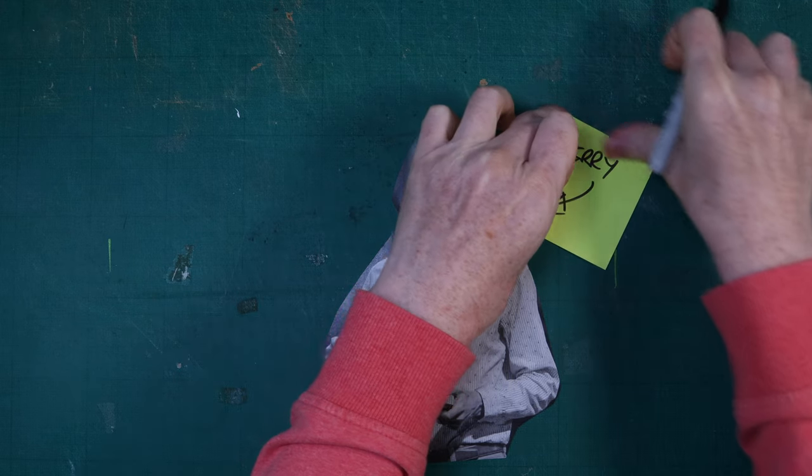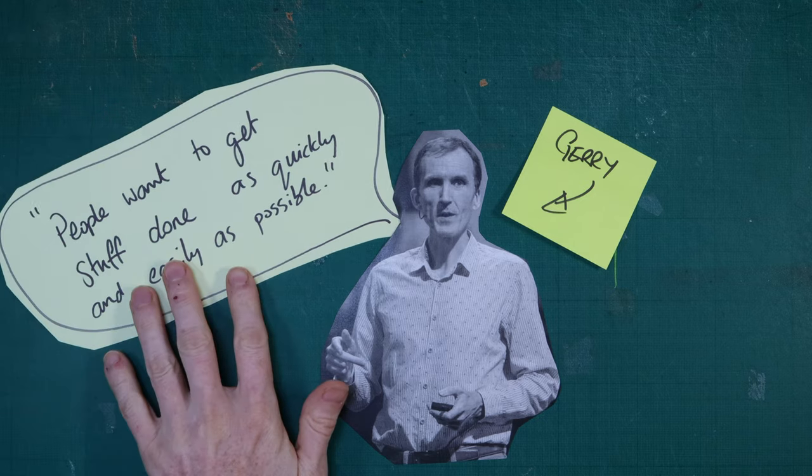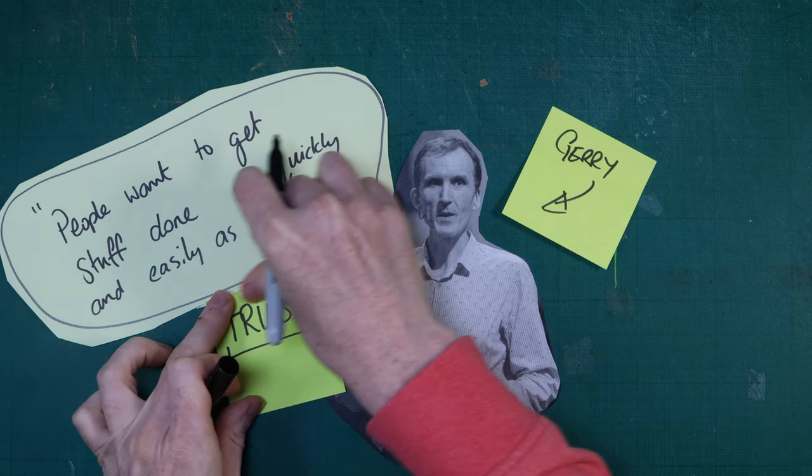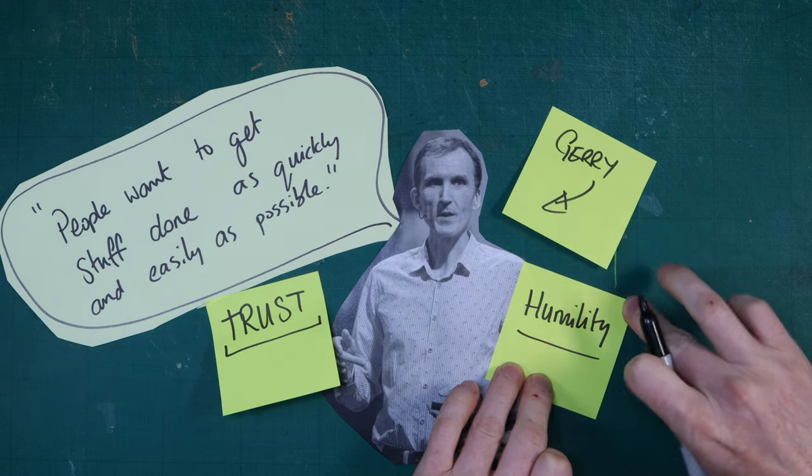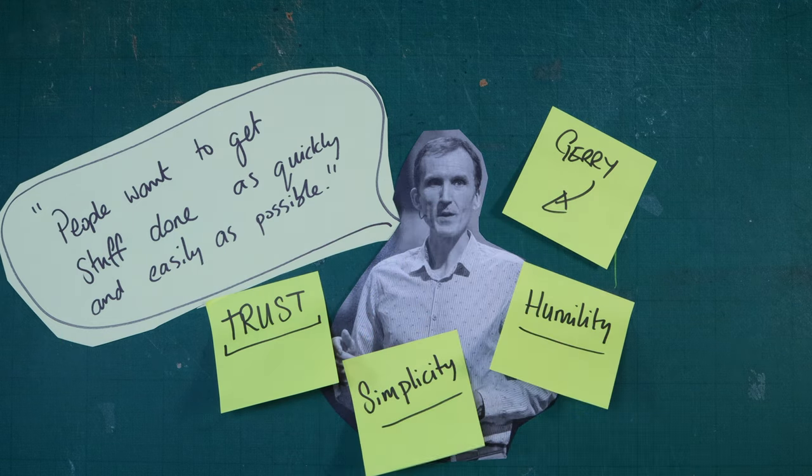Gerry McGovern is a well-known author, consultant, and speaker who focuses on improving user experience, content strategy, and web accessibility. He's particularly recognized for his work in emphasizing trust, humility, and simplicity. Considering the authenticity of content and a desire to be building on success, he notes trust as a critical element in web design and content creation because users need to trust the information they find on a website. This involves ensuring that the content is accurate, up-to-date, and reliable. Gerry McGovern emphasizes the importance of building trust with users by providing transparent and authentic content, avoiding misleading or false information, and clearly citing sources when necessary.